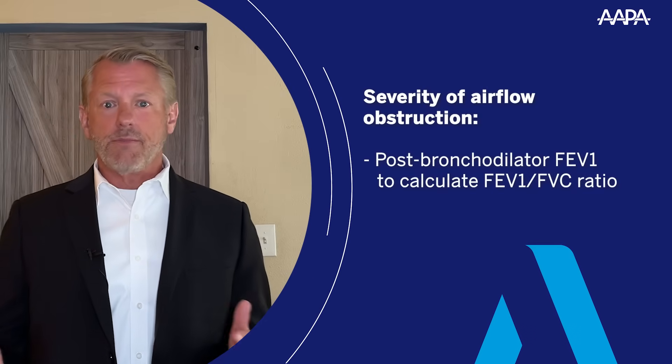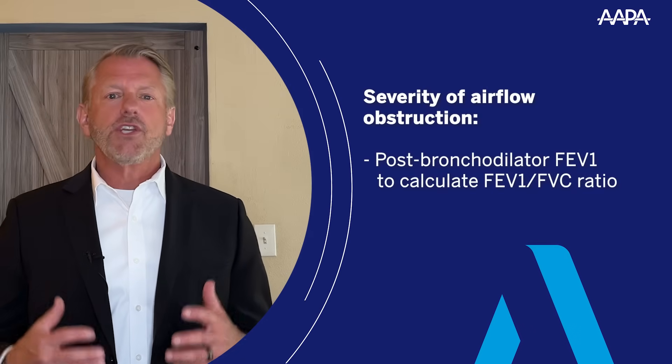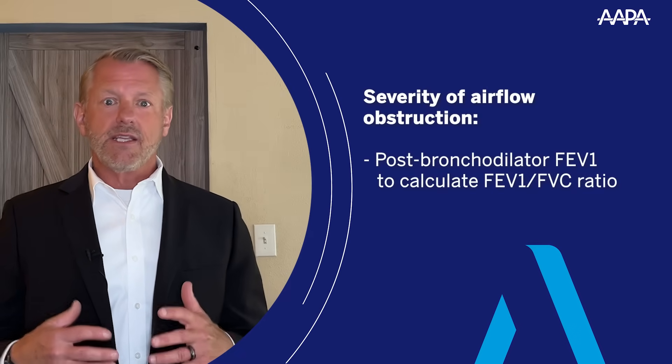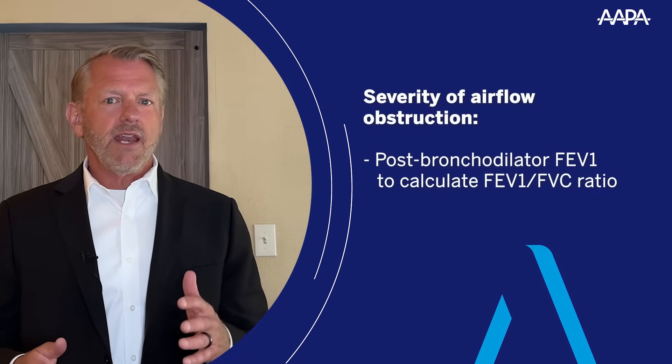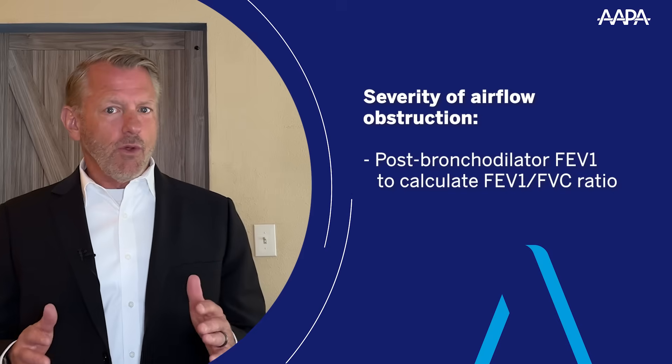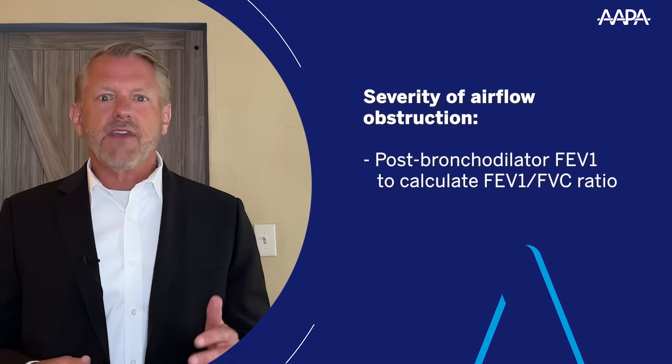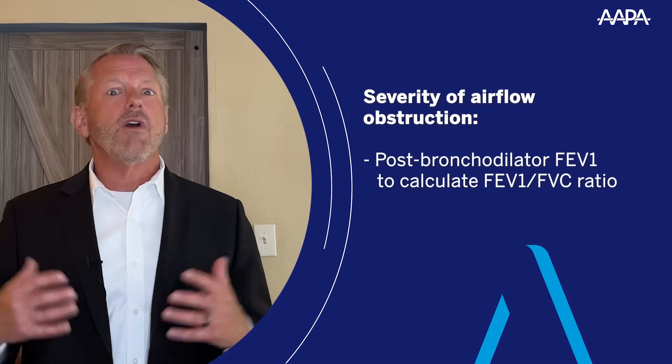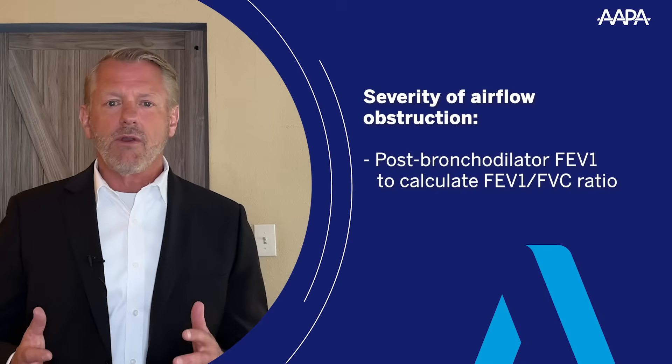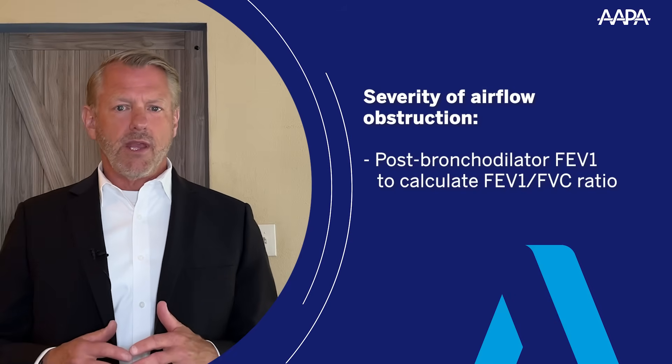Once you have the confirmed diagnosis of COPD, there are five fundamental aspects that you need to consider when starting and advancing therapy. The first one is the extent of airway obstruction — just how severe is the obstruction present? That's that FEV1/FVC ratio we talked about. When it's significantly below 0.7, the patient struggles to get air out, and that needs to be taken into account.